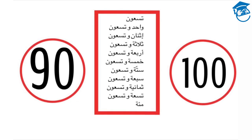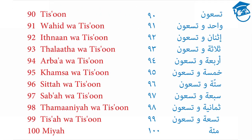The numbers from 90 to 100. 90 is Tissa'un. If we want to say 91, we say Wahed was Tissa'un. 92 is Ithnan was Tissa'un. 93 is Thalatha was Tissa'un. 94 is Arba was Tissa'un. 95 is Khamsa was Tissa'un. 96 is Sitta was Tissa'un. 97 is Seba was Tissa'un. 98 is Thamanya was Tissa'un. 99 is Tissa was Tissa'un. And Mi'ah is 100. Mi'ah.